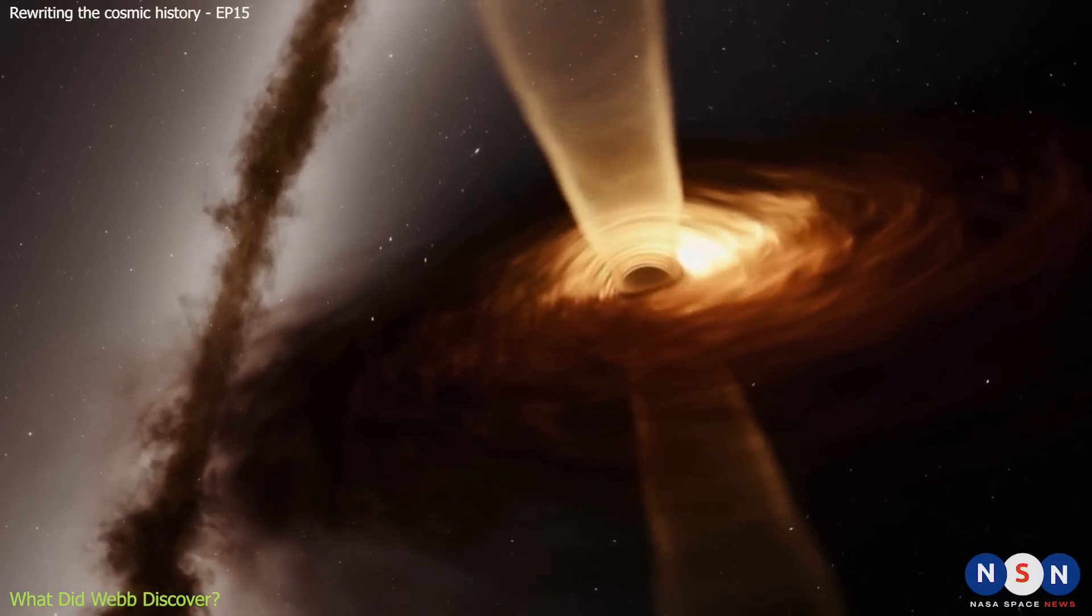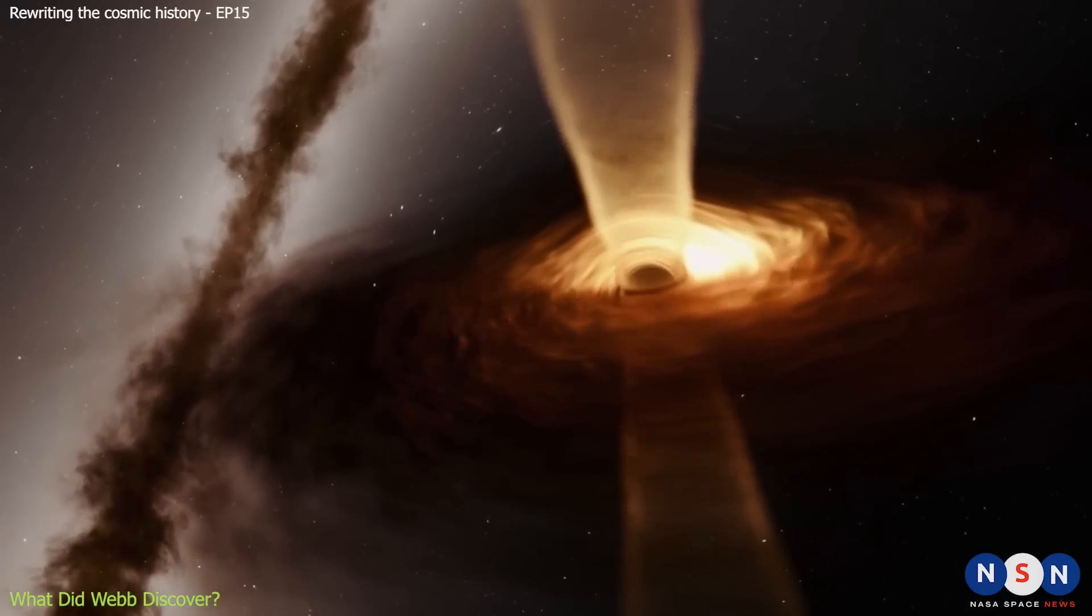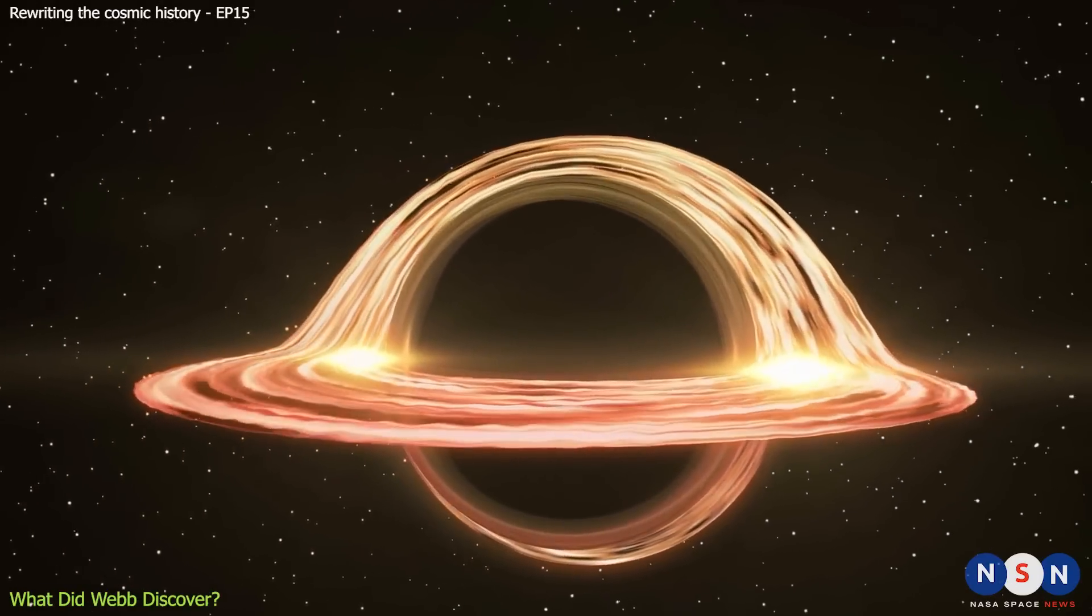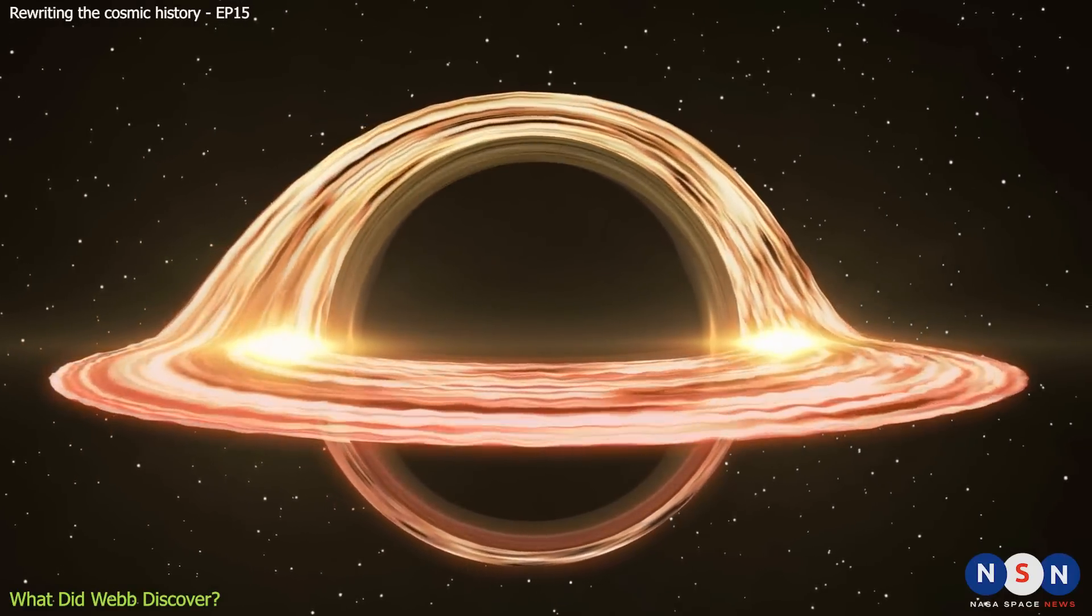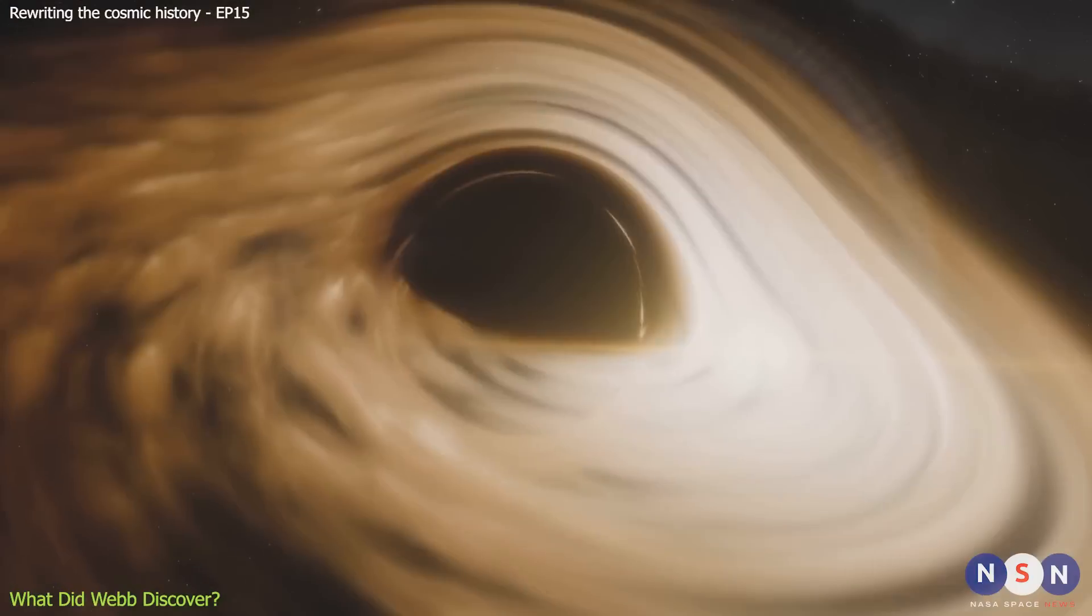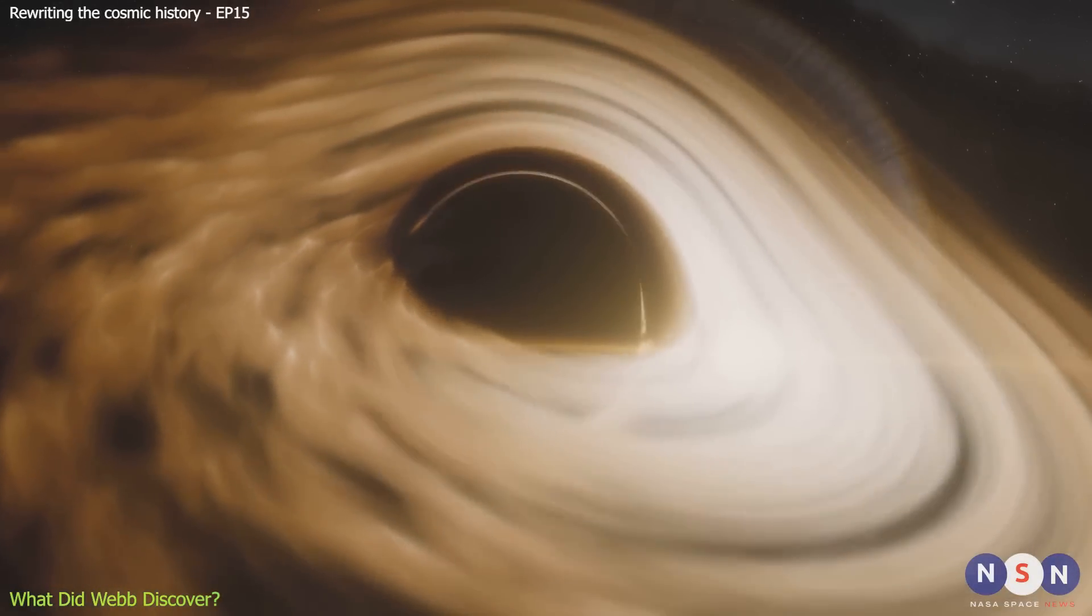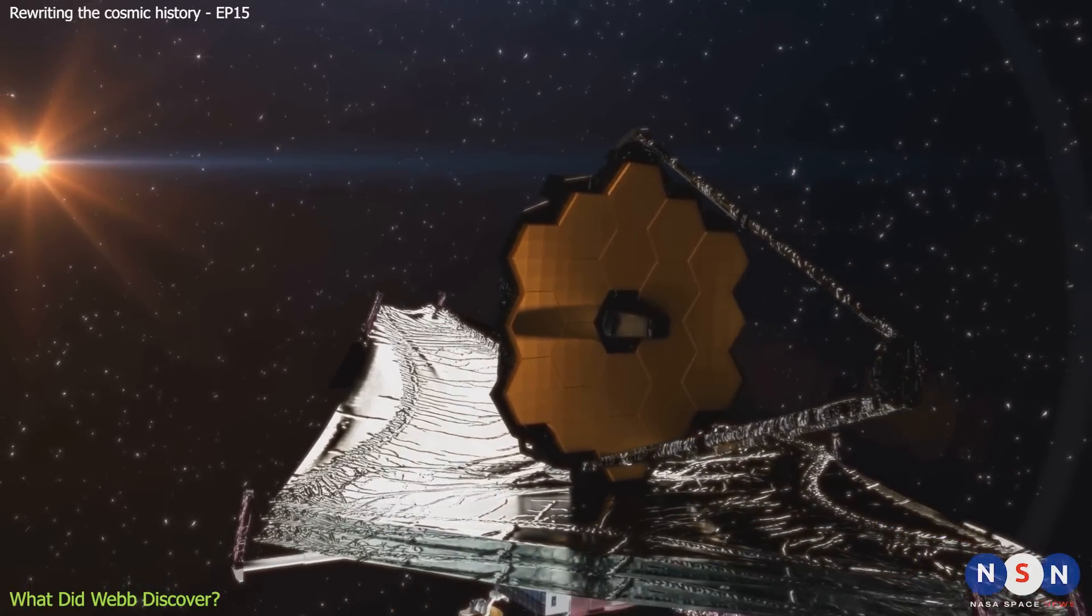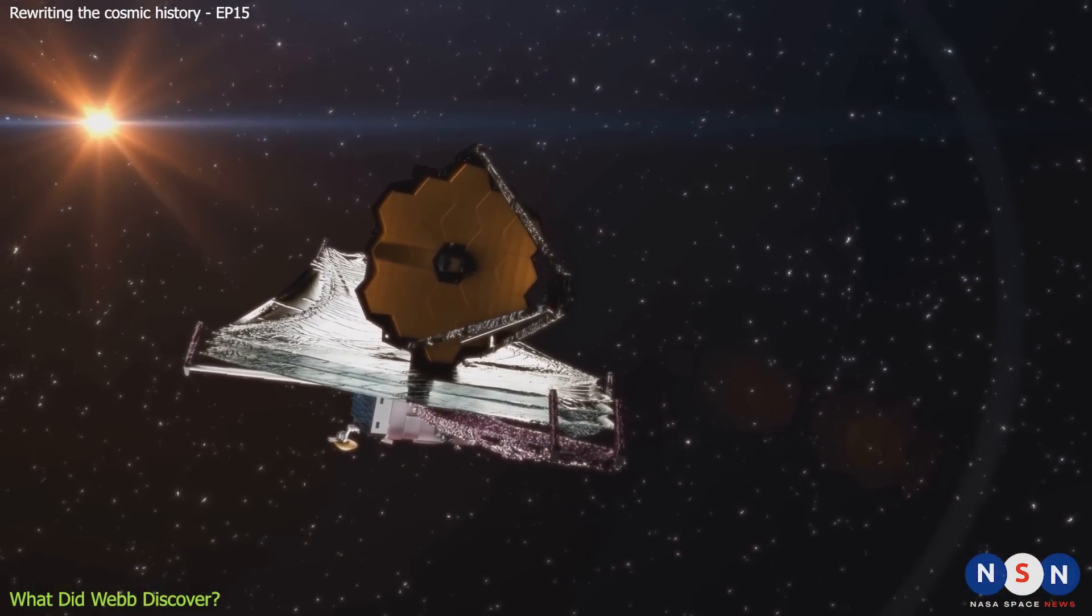One possible explanation is that this black hole is feeding on a very large amount of gas and dust from its surroundings, creating a hot and bright disk around it called an accretion disk. This disk radiates a lot of infrared light, which is what James Webb can detect very well. Another possibility is that this black hole is spinning very fast, which makes it more efficient at converting matter into energy.